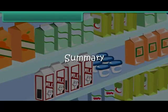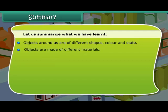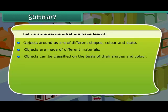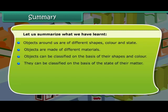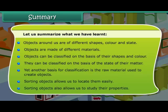Summary: Objects around us are of different shapes, colors, and states. Objects are made of different materials. Objects can be classified on the basis of their shapes, color, and the state of matter. Another basis for classification is the raw material used to create objects. Sorting objects allows us to locate them easily and also allows us to study their properties.